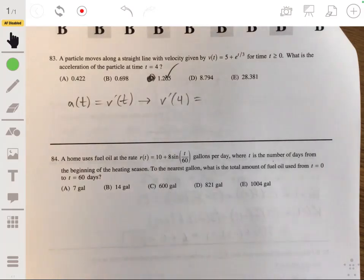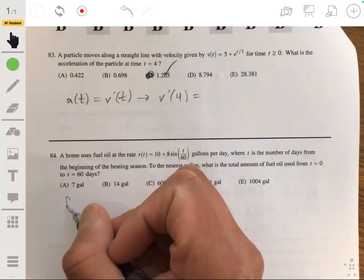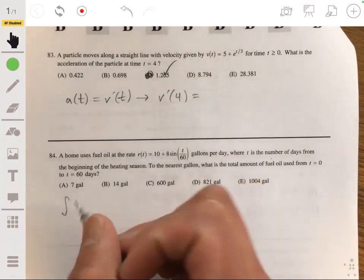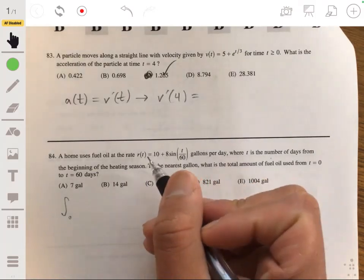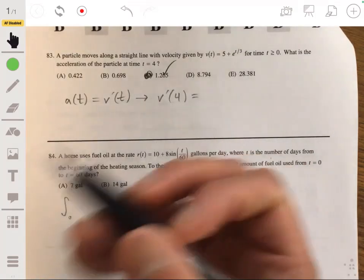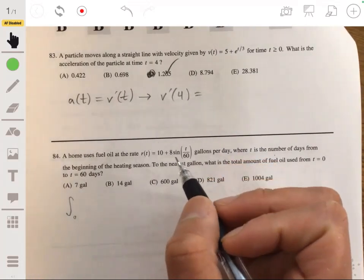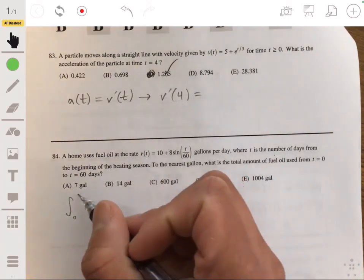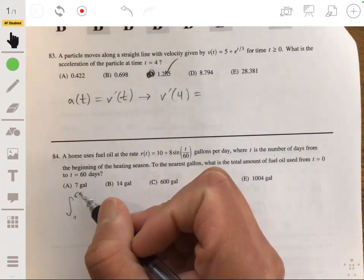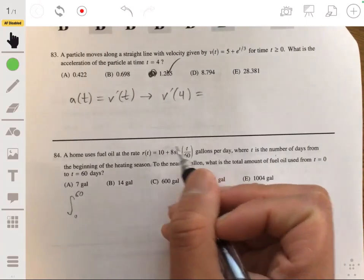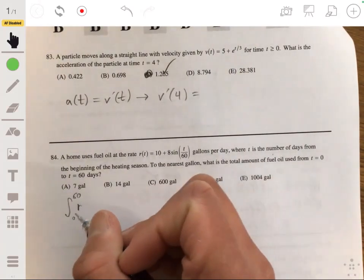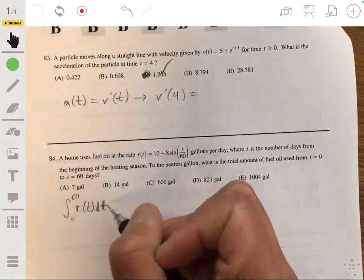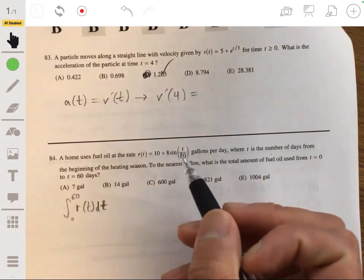Okay, so what you essentially want to understand and what I assume they're trying to assess is that you understand that when you integrate the rate, that will lead you back to the original function. So we want to find the total amount of fuel used from t equals 0 to t equals 60. We just integrate this equation. We integrate from 0 to 60 r(t) dt because this will give us the anti-derivative of r(t).